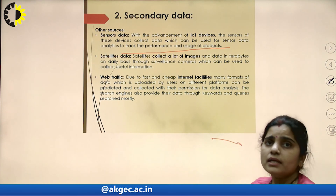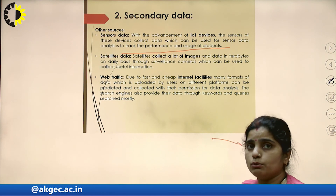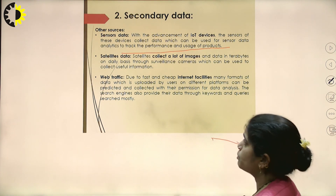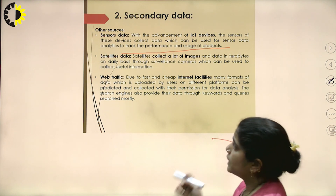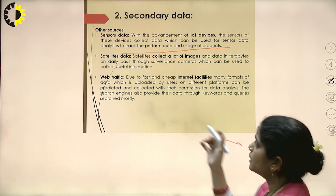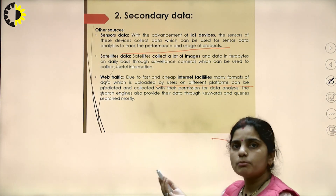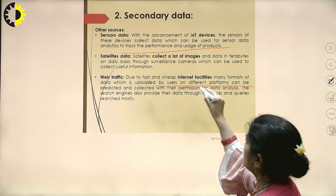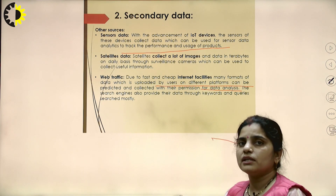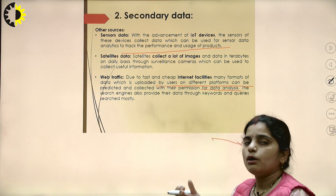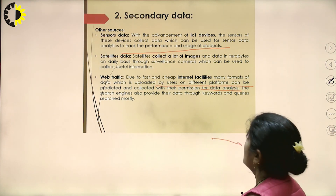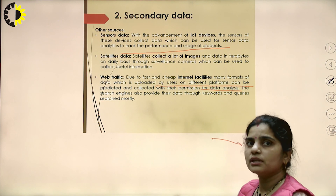The second additional source is satellite data. A satellite can collect a lot of images and data — in terabytes — on a daily basis. Satellite data can be collected using surveillance cameras, which can also be used to collect useful information in the form of images. The last one is web traffic. Due to fast and cheap internet facilities, many formats of data can be uploaded by users on different platforms and collected with their permission for data analysis. Search engines also provide data through keywords and frequently searched queries.